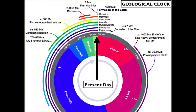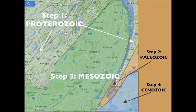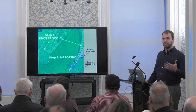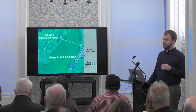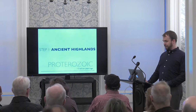Those four bits of bedrock were formed in four different time periods. Step one is the ancient highlands, formed during the Proterozoic period. Step two was the Paleozoic period — 'old life,' mostly single cells. Then the Mesozoic, 'middle life,' when dinosaurs appear. And Cenozoic is basically when we've been in existence.